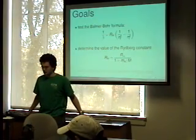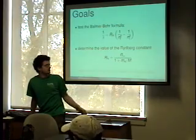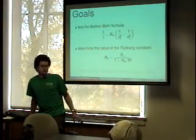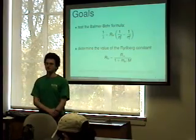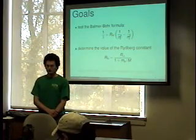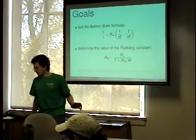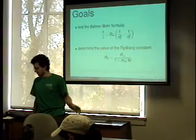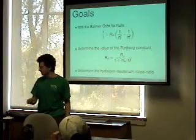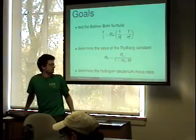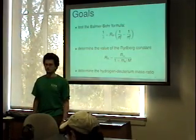The second goal was to determine the value of the Rydberg constant, which is dependent on what isotope you're looking at — it's dependent on the mass of the nucleus. The formula for this is that the Rydberg constant equals R-infinity, which tells you approximately how much energy it takes to free an electron from the atom, scaled by one divided by the quantity one plus the mass of the electron over the mass of the nucleus. The last goal was to determine the hydrogen-to-deuterium mass ratio, which we can do by finding the Rydberg constant for both hydrogen and deuterium.